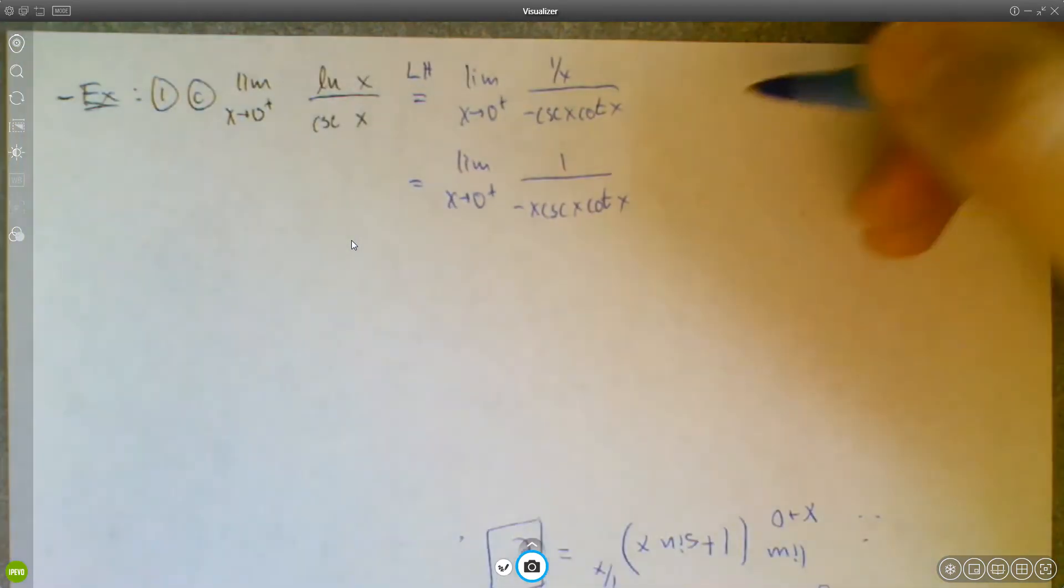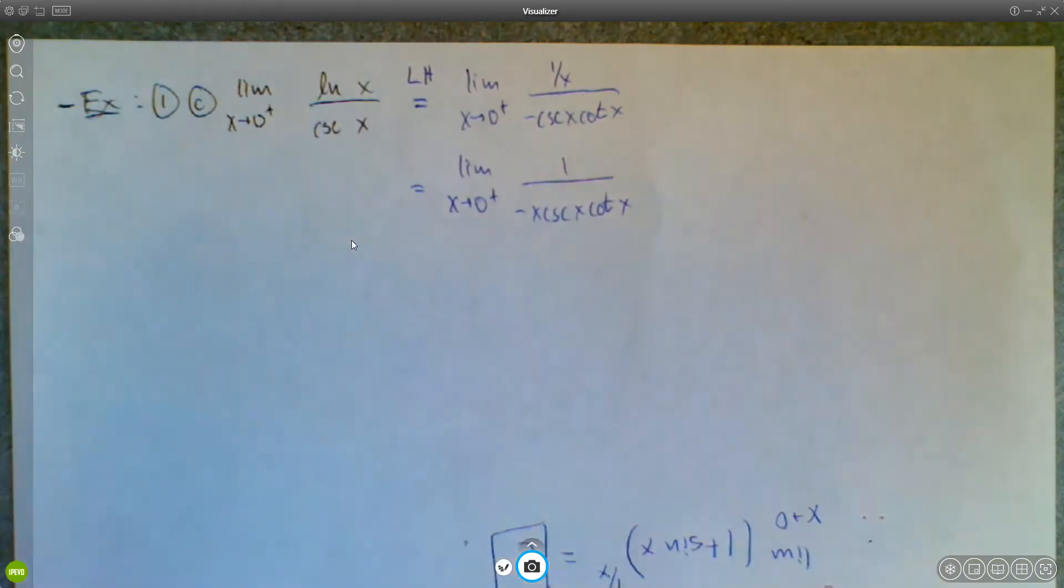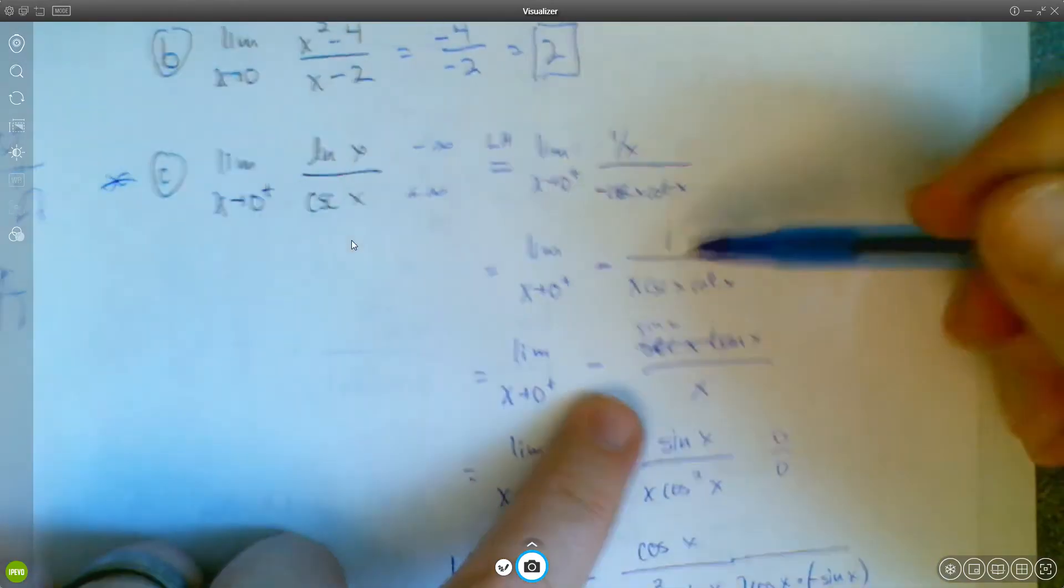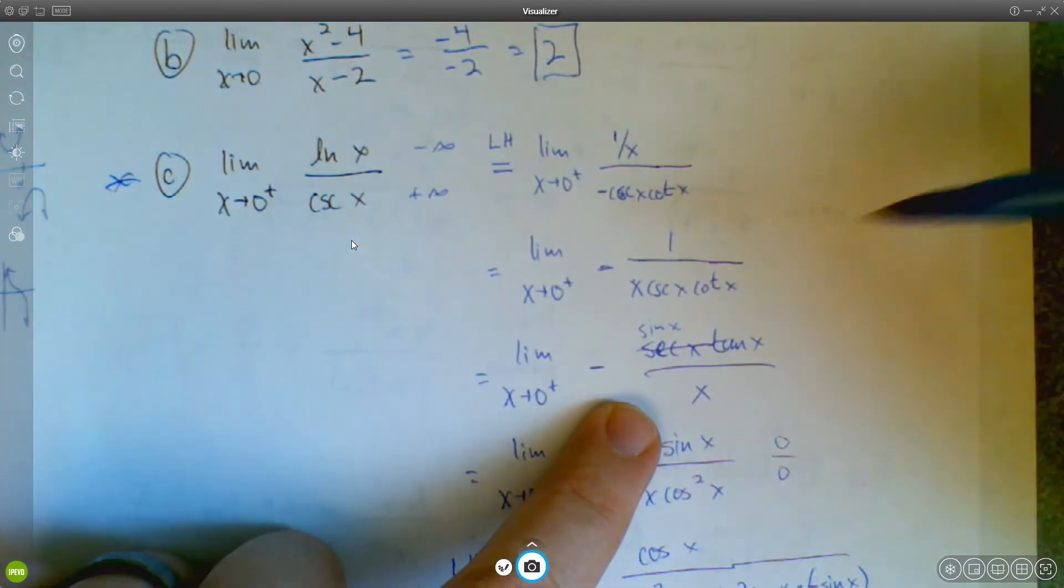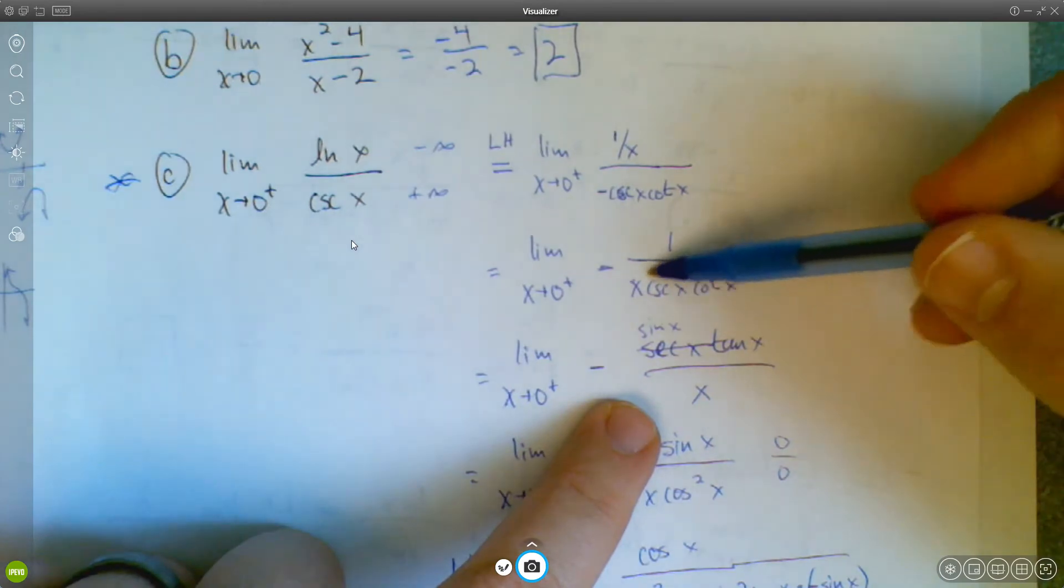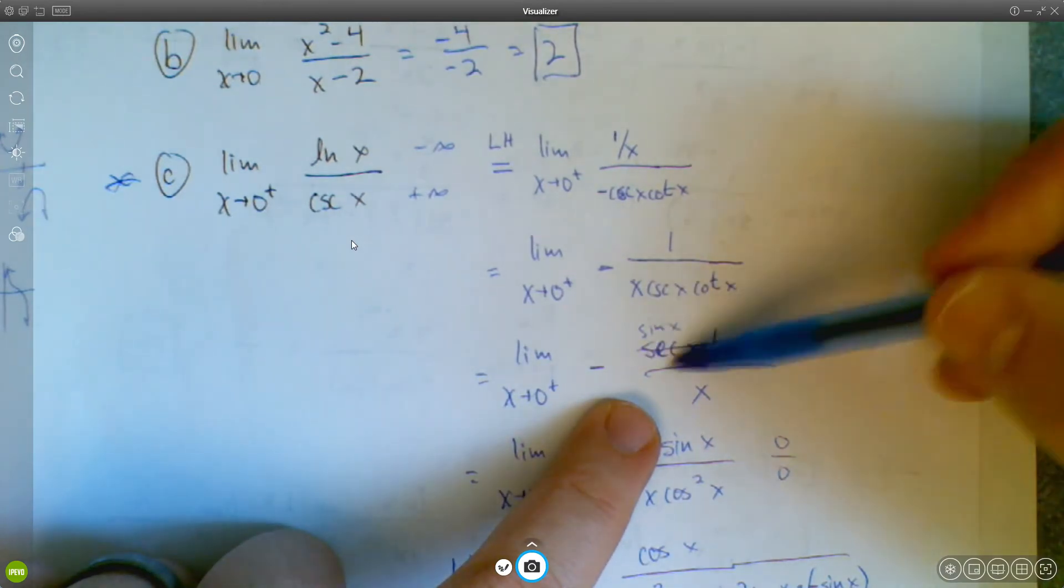And then the mistake that I made was on this next step, when I said, well, I can move this stuff up here using the reciprocal identities. And that's true. I can do that. But the reciprocal identity for cosecant is not secant, right?